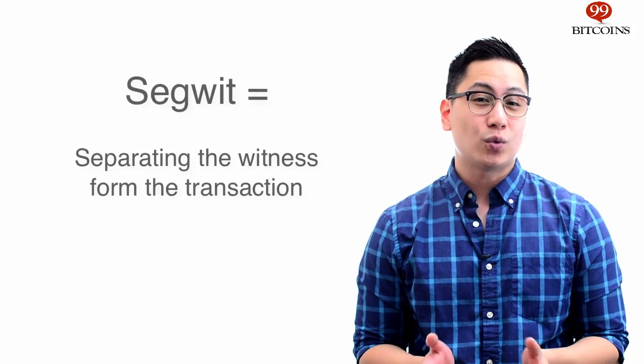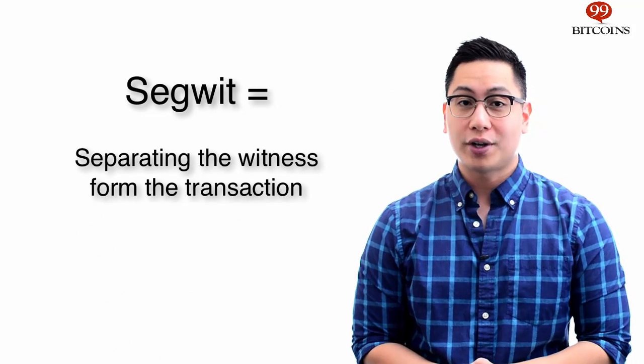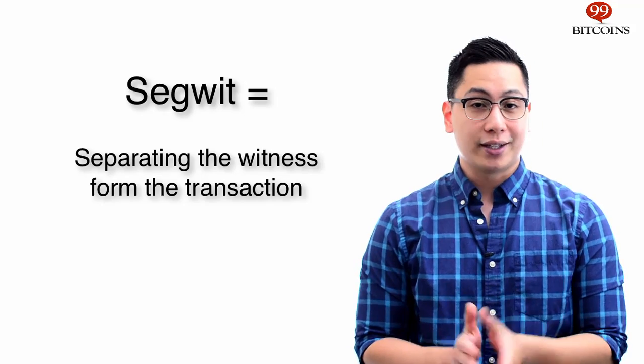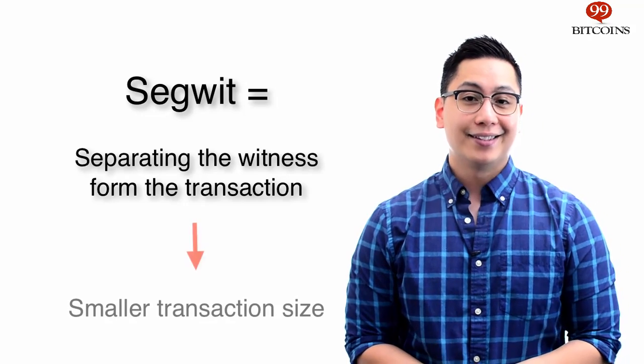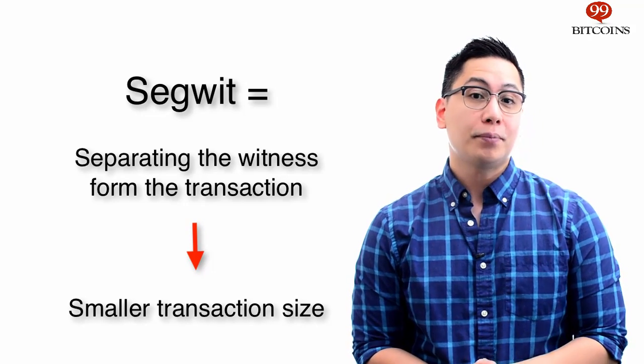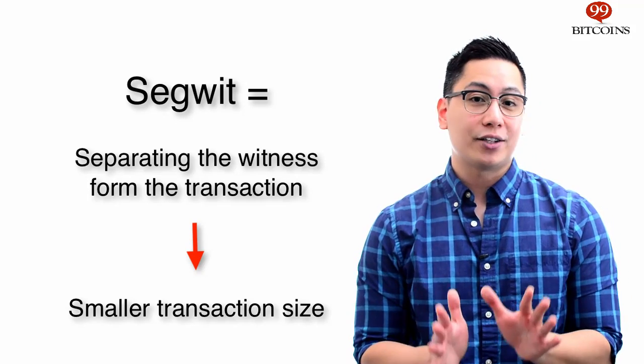Segregated witness means that we are separating the witness from the transaction in order to make it smaller in size. The signature data, or witness, will still be transmitted — however, it won't be included inside the transaction.